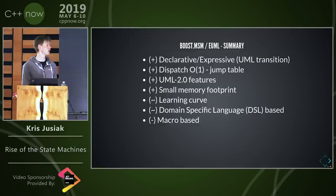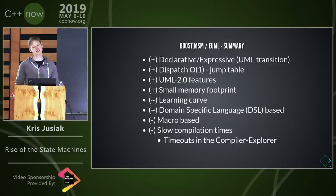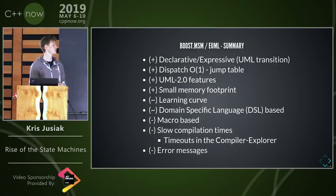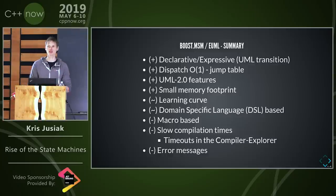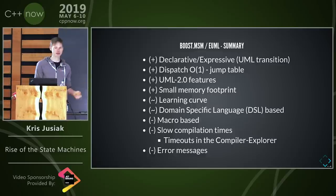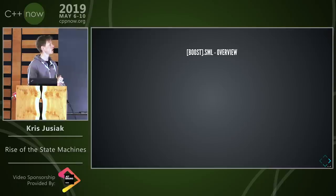In summary for MSM: it's declarative, kind of like UML, uses jump tables, has UML 2 features, and a small memory footprint. There's a learning curve due to macros, but the DSL is nice and easy. The main problem is that it's really slow to compile — I had to switch to my own Compiler Explorer version to show results. It takes forever to compile big state machines, and error messages are quite bad due to all the TMP and MPL.